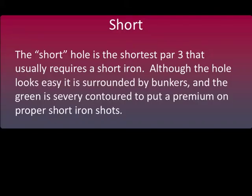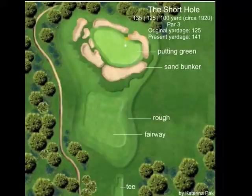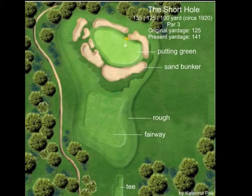As the name refers, the short hole is a par 3 of relatively short distance, normally in the 120 to 130-yard range. Generally, the green contours are the most complex found on the golf course. Sand usually surrounds the elevated green, giving the green an island look. Here's an artistic rendition of what a short hole would look like. The original short hole is believed to be the 5th at Royal West Norfolk.